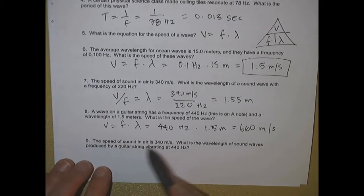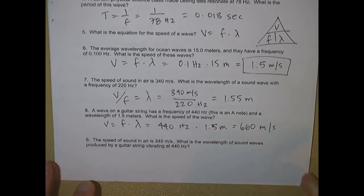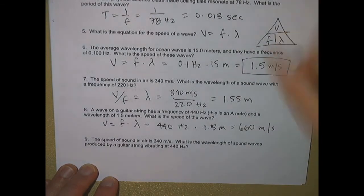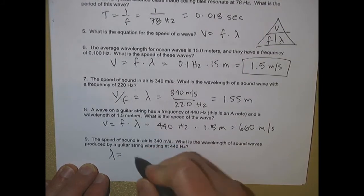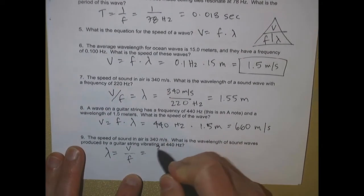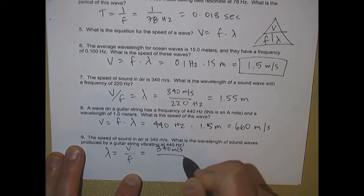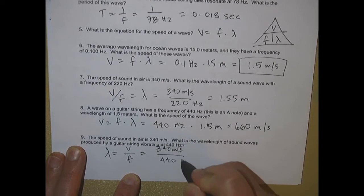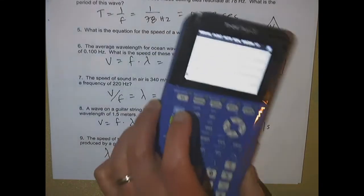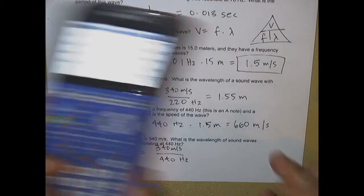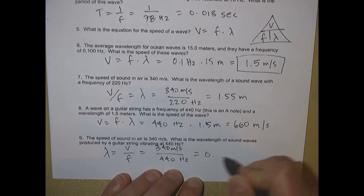Finally, the speed of sound in air is 340 meters per second. What is the wavelength of sound waves produced by a guitar string vibrating at 440 Hertz? Wavelength equals velocity over frequency. The velocity in air is 340 meters per second and the frequency is 440 Hertz. 340 divided by 440 gives 0.77 meters.